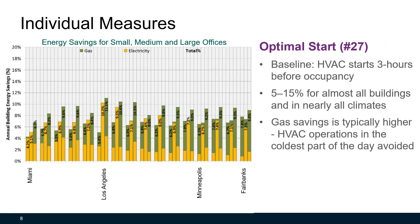The next measure is optimal start. The baseline for this strategy is that HVAC equipment starts three hours before occupancy. The optimal start strategy determines the optimal start time for HVAC equipment. 5 to 15 percent of energy savings can be achieved for almost all buildings and in nearly all climates, and gas savings is typically higher because HVAC operations in the coldest part of the day are avoided.